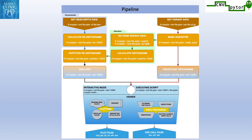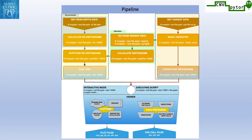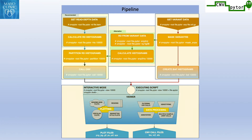Here is an overview of the data processing steps. On the left, we have steps for reading RD data from an alignment file, creating histograms, segmentation, and CNV-calling. On the right, we have steps for reading variant data, filtering variants, and calculating the likelihood function. In the middle, we have an alternative way to read RD information from a variant file, which can be used if the alignment file is not available. On the bottom, we have the visualization module, which can be used to visualize RD and BAF information in an interactive way.